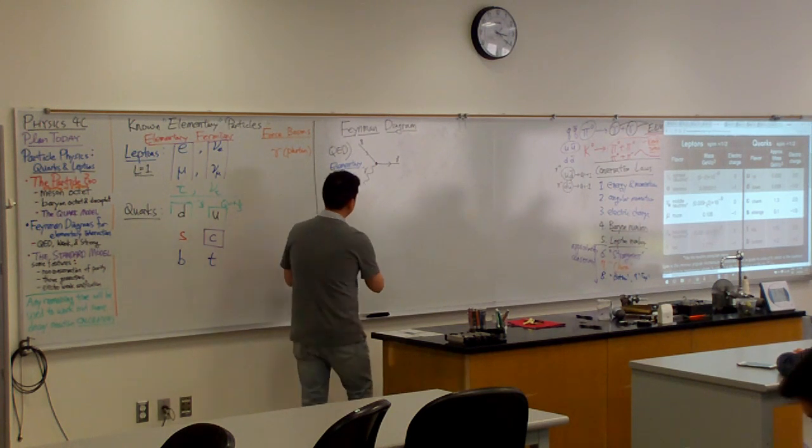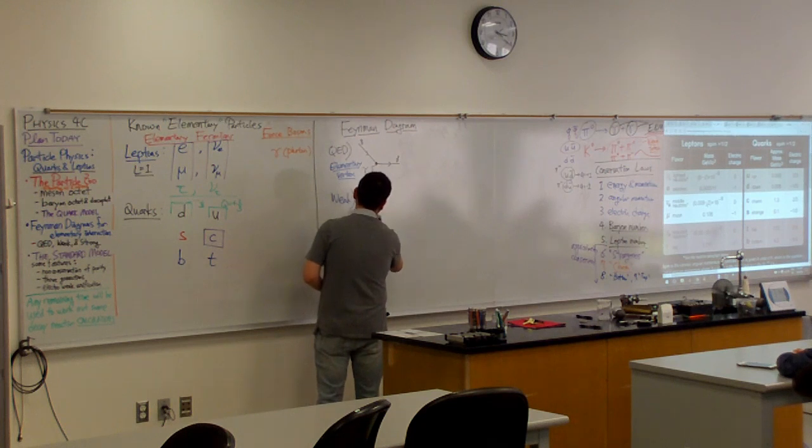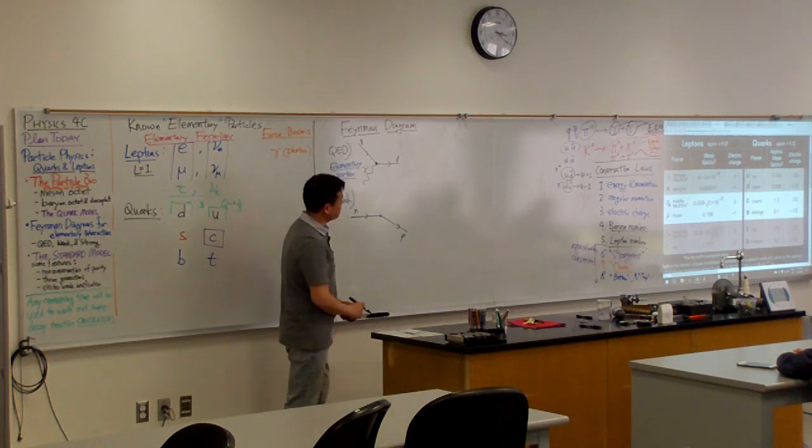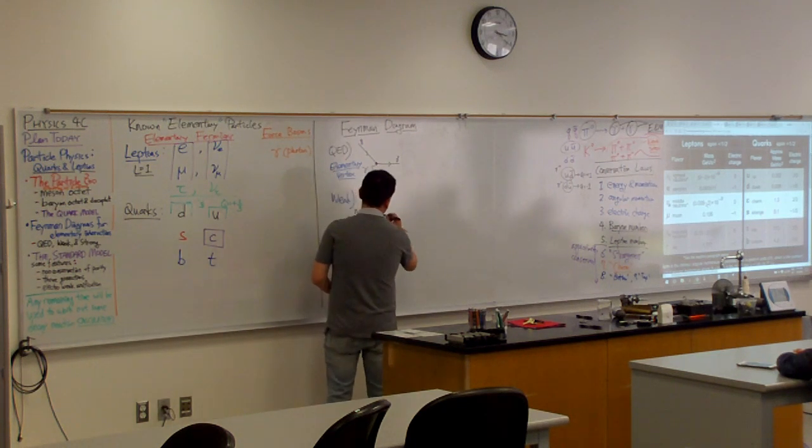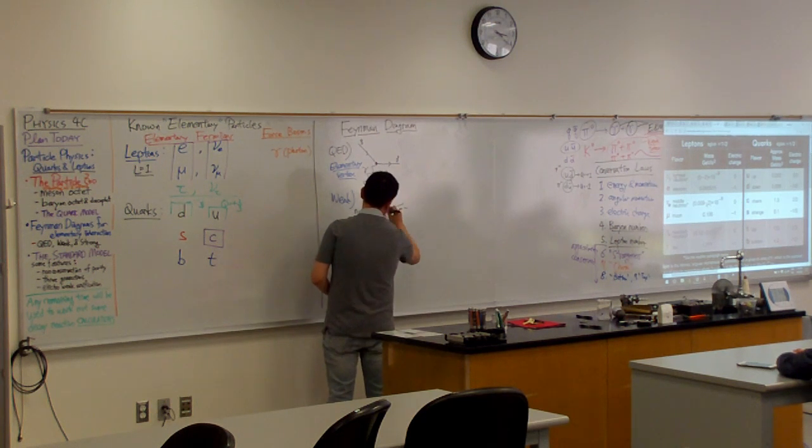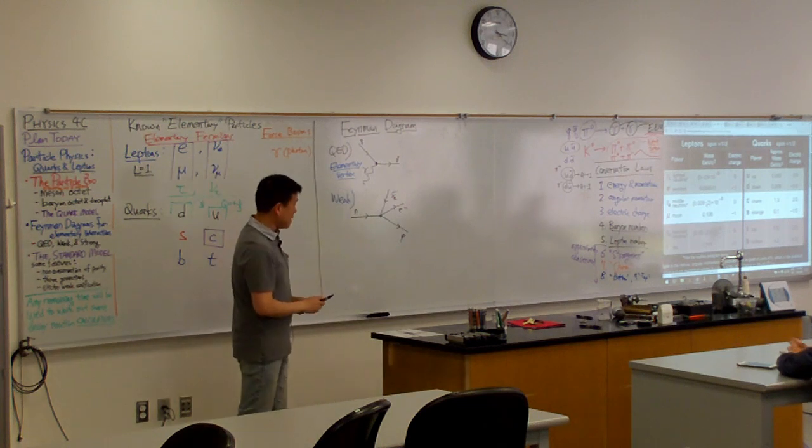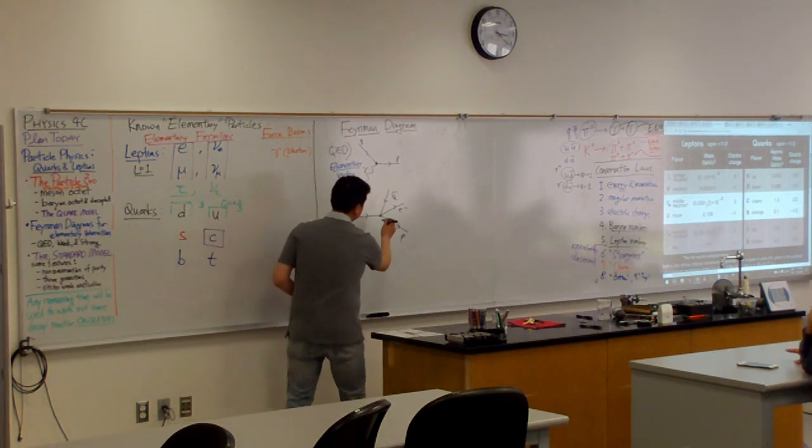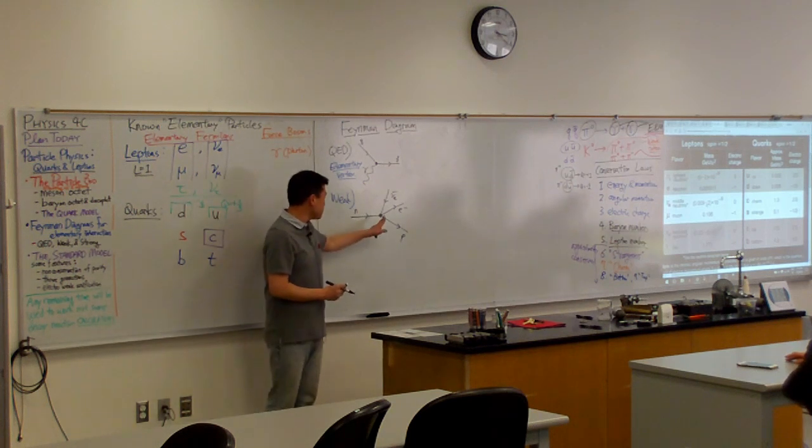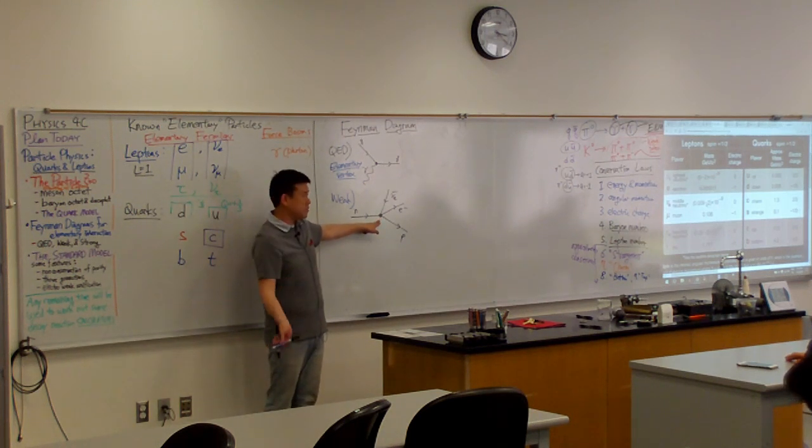The way it was done was you have a particle coming in, neutron that decays into proton, and in the process it emits an electron and it emits an electron anti-neutrino. And this is what's called contact interaction. And the contact interaction has an issue.